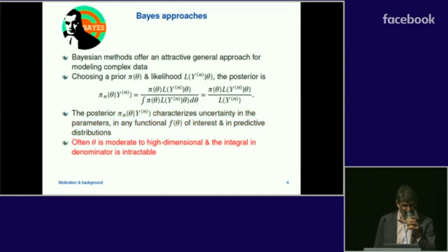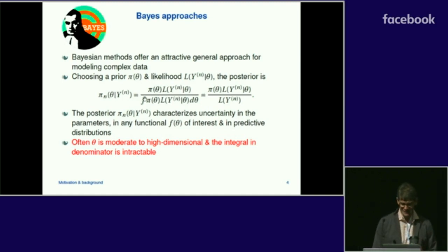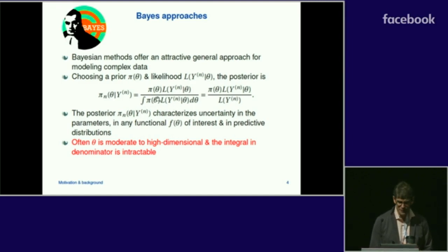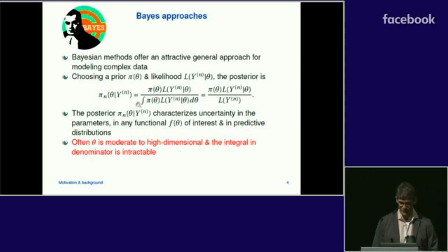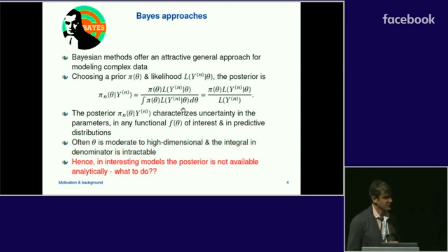So what's the problem? If you look at the Bayes equation, theta is often moderate to high dimensional, and in an interesting model, the integral in the denominator is a nasty beast. We're not very good at approximating high-dimensional integrals. Many methods have been proposed to approximate the marginal likelihood in the denominator, but many aren't very good. We run into computational problems approximating this integral and hence approximating the posterior. Often we have the prior and the likelihood, but we can't evaluate this integral.